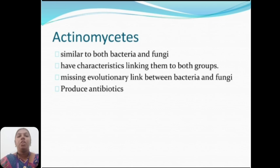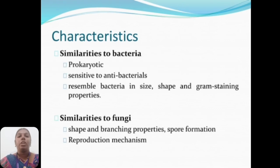Actinomycetes are similar to both bacteria and fungi, having characteristics linking them to both groups. They represent a missing evolutionary link between bacteria and fungi and produce antibiotics. Similar to bacteria: they are prokaryotic, sensitive to antibacterials, and resemble bacteria in shape and Gram-staining properties. Similar to fungi: shape and branching properties, spore formation, and reproduction mechanism.